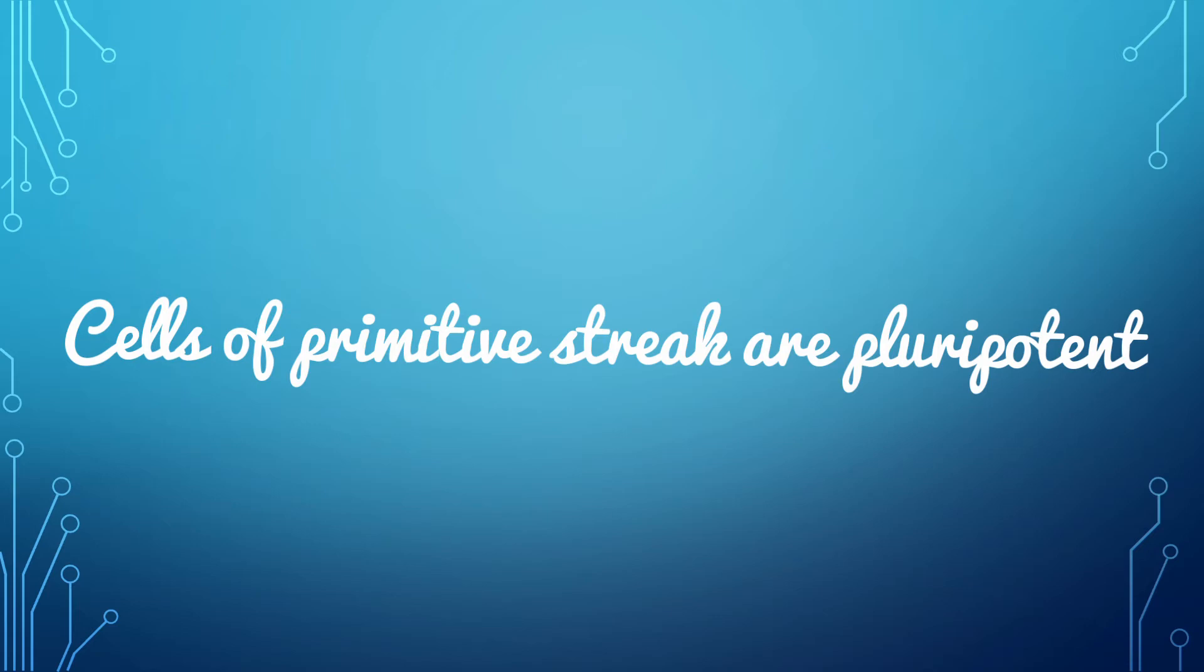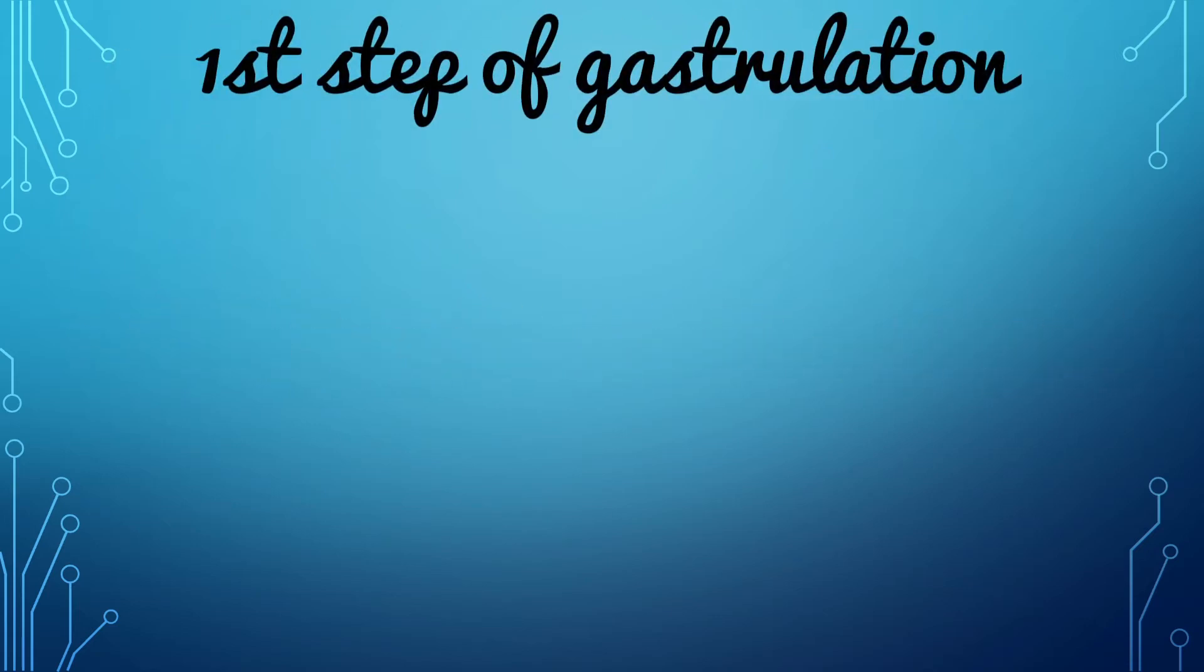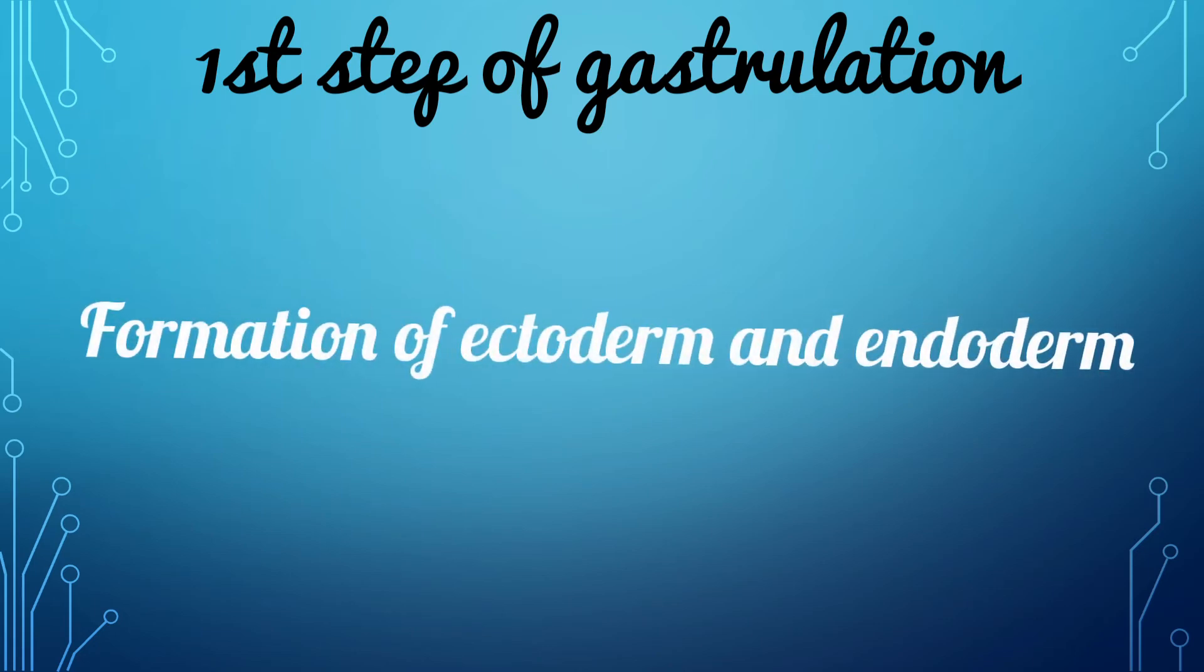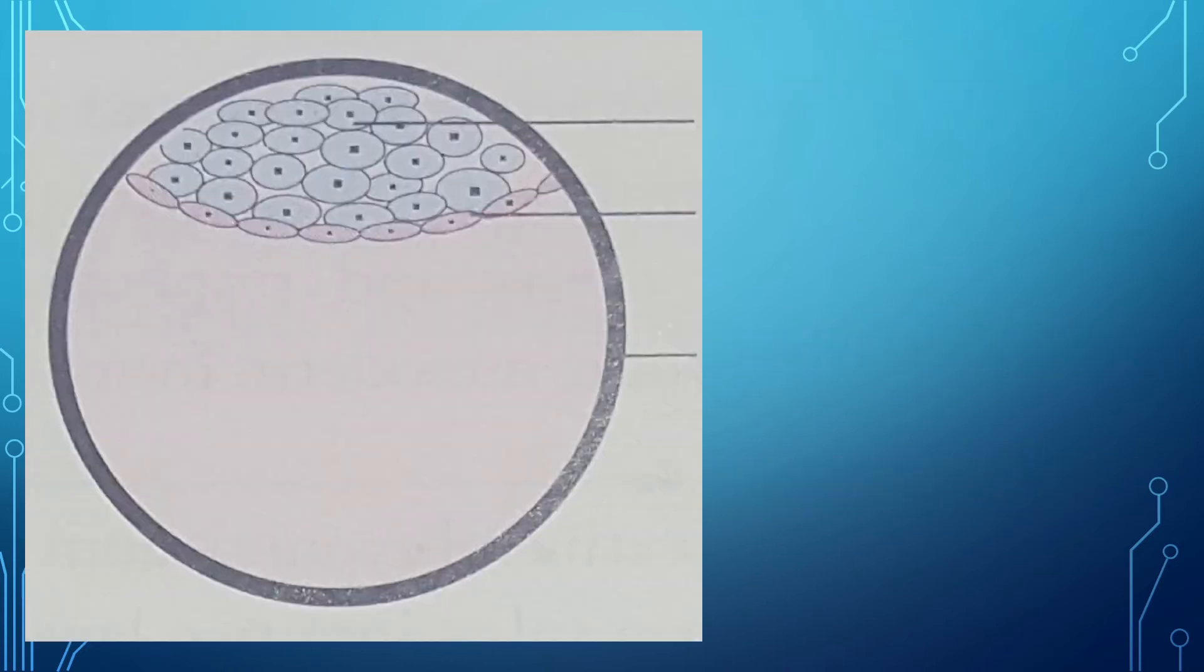As I told earlier, the first step in gastrulation is the formation of ectoderm and endoderm, that is the bilaminar embryonic disc. First, the cells of the inner cell mass move towards the cavity of the blastocyst and become flattened and arranged in a single layer, and this layer is called the endoderm. The remaining cells of inner cell mass become columnar and form the ectoderm.